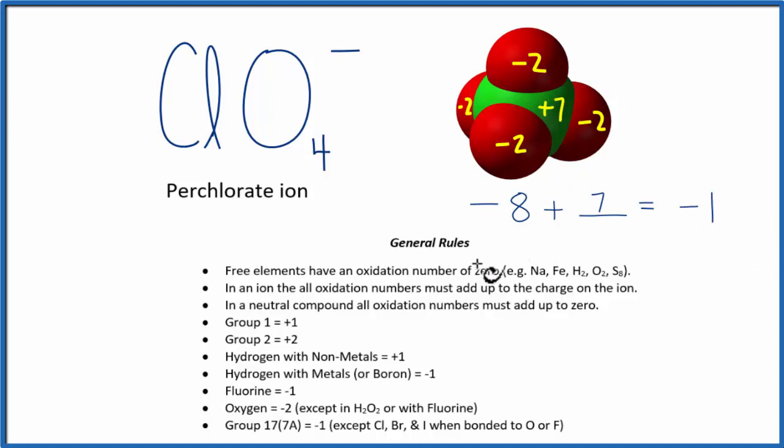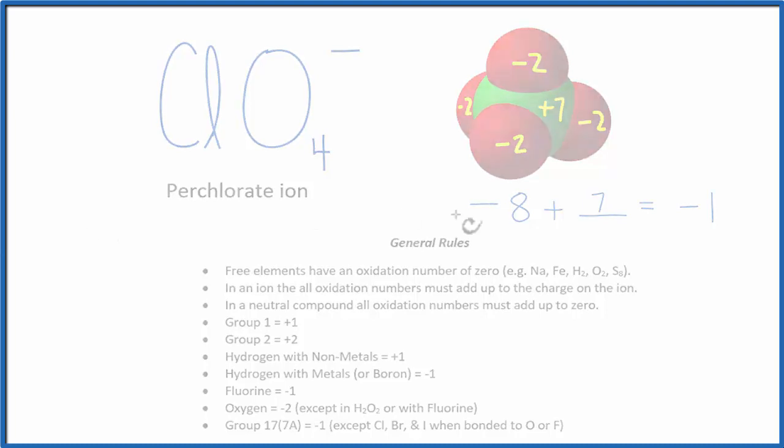So to recap, we found the oxidation number for the elements we knew. In this case, we could find the oxygen here. And then we used that information plus the charge on the ion to find the oxidation number for the one we didn't know, the chlorine. This is Dr. B with the oxidation numbers for ClO4-, the perchlorate ion. Thanks for watching.